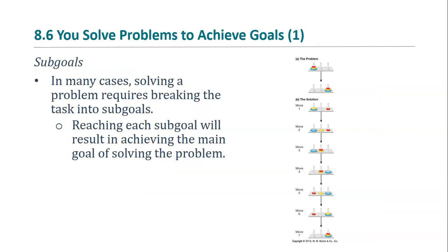There are several different strategies for solving problems. One involves creating sub-goals, as demonstrated by the Tower of Hanoi puzzle. The rules are that one must move all rings from the left peg to the right peg, moving only one ring at a time, and a larger ring may not be placed on top of a smaller ring. Following the solution shown, you can see how to solve the problem using a series of seven steps.